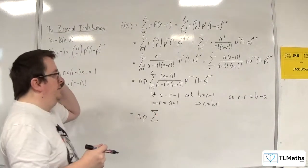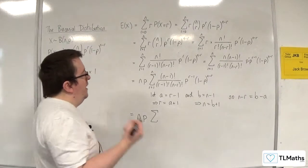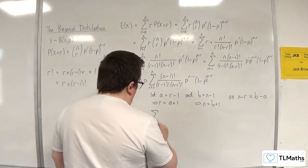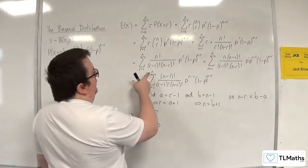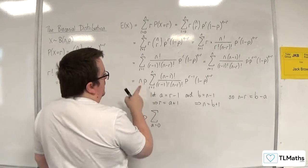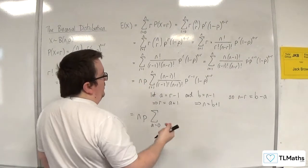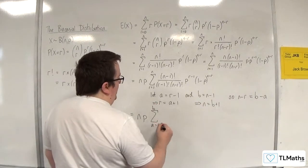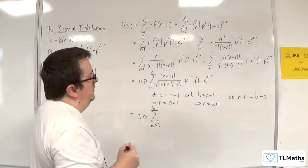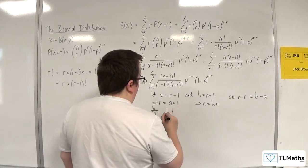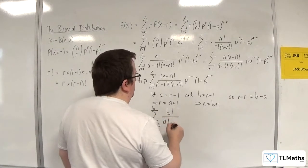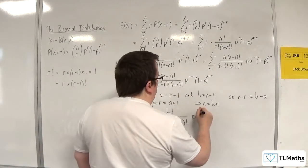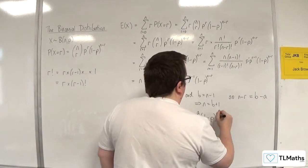The summation goes from r equals 1 to n. When r equals 1, a equals 0; when r equals n, a equals n minus 1, which is just b. So we're going from a equals 0 up to a equals b. Now the n minus 1 factorial becomes b factorial, the r minus 1 factorial becomes a factorial, and n minus r factorial becomes b minus a factorial. I've got p to the r minus 1, which is p to the a, and 1 minus p to the n minus r, which is 1 minus p to the b minus a.